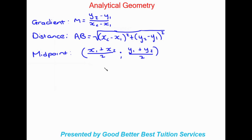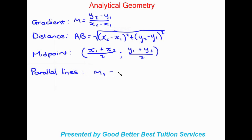So all we're doing is working out a coordinate. Moving on, we'll also be looking at finding out whether lines are parallel to each other. Two lines are parallel if the gradients are equal, so m1 has to be equal to m2. Gradient is the inclination of a line, and if the lines have the exact same inclination they are parallel to each other.